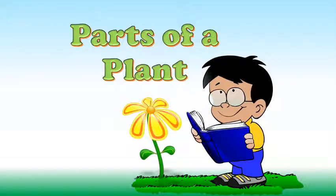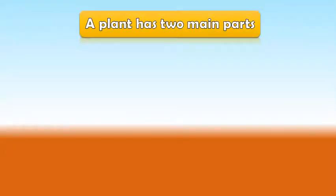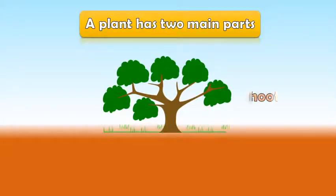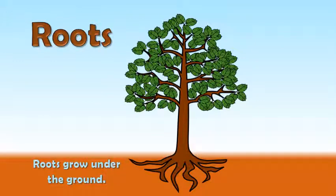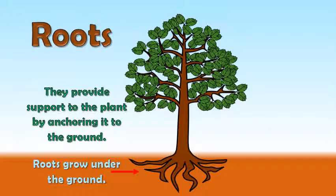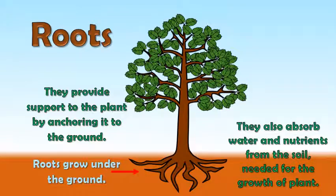Parts of a plant. A plant has two main parts: shoot and roots. Roots grow under the ground. They provide support to the plant by anchoring it to the ground. They also absorb water and nutrients from the soil needed for the growth of the plant.